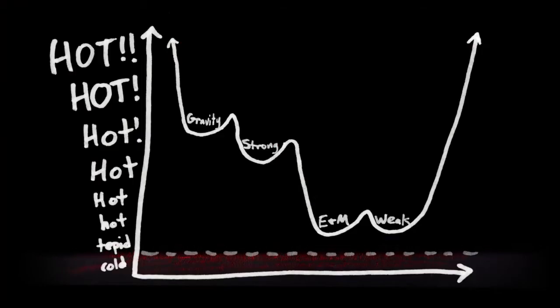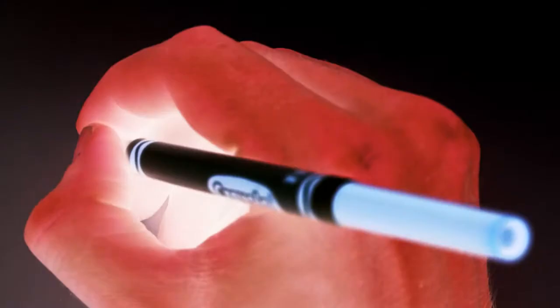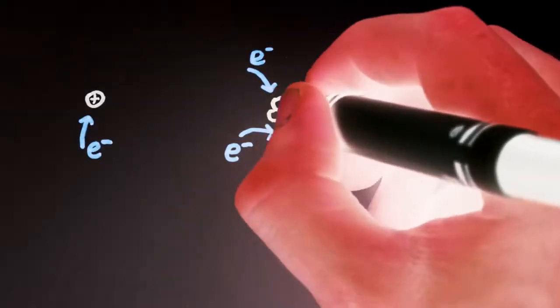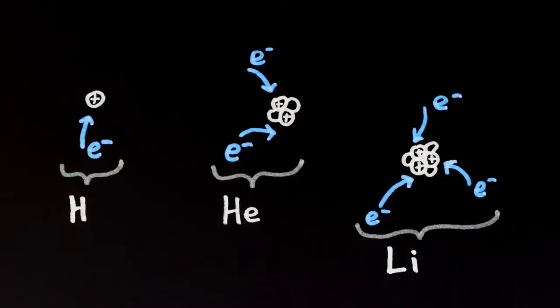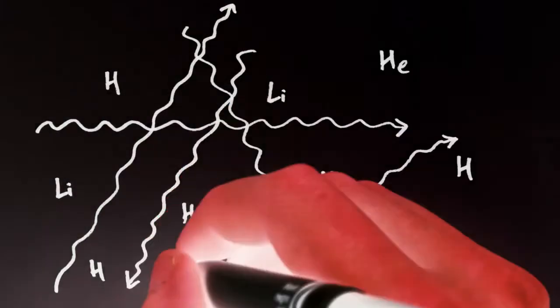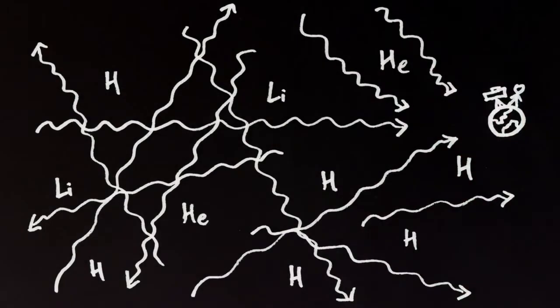When the universe cooled below a few thousand degrees Kelvin, about the temperature of fireplace embers, the loose electrons moved slowly enough to get snatched from the soup by the roving nuclei to make completed atoms of hydrogen, helium, and lithium, the three lightest elements. The universe is now, for the first time, transparent to visible light. And these free-flying photons are visible today as the cosmic microwave background.